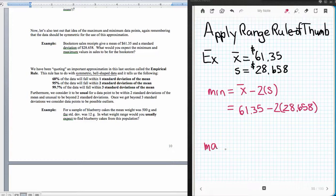And our expected maximum value is going to be that mean X bar and then plus two standard deviations above or 61.35 and then plus two times 28.658.